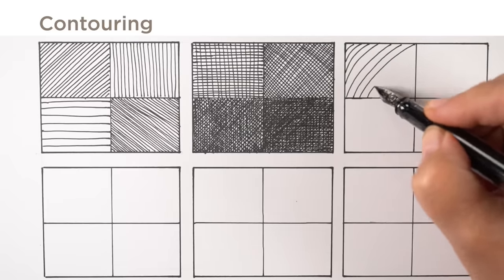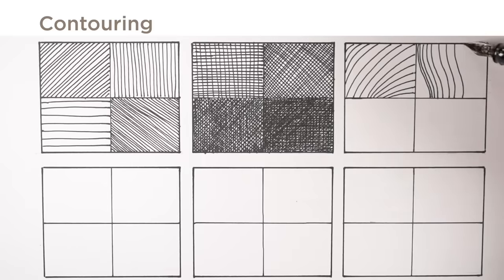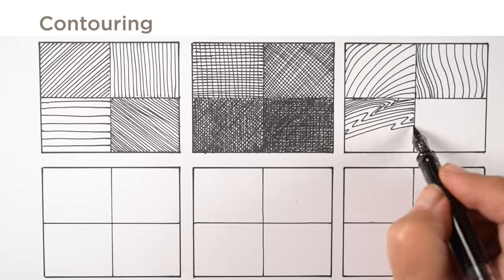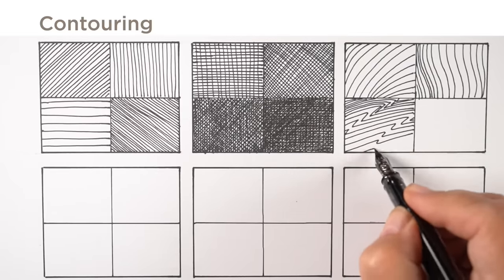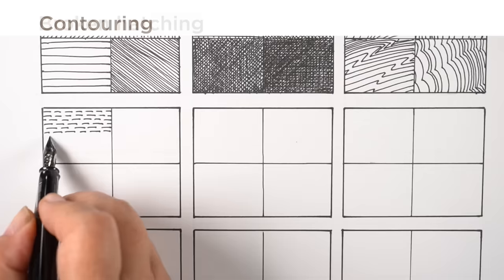When you're doing a dark area, contouring goes around the shapes of the object, so you can indicate the shape of it simply by the angle of the lines. If there's an apple that you're going around the edge of, if there's ripples on the water, if there's clouds in the sky - lots of different things you could use contour lines for to indicate the shape of the object itself.